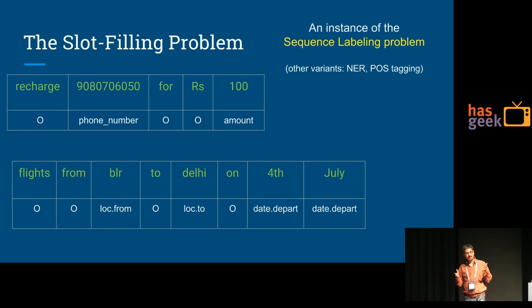What is slot filling or how do you formulate it as a more mathematical problem? Essentially it's an instance of sequence labeling. You have this sequence and for every item it's processed left to right. Every item gets a label: all labels are outside, I don't understand, this is the phone number you have extracted, irrelevant, irrelevant, amount. Here BLR: loc.from, Delhi: loc.to, depart, depart.